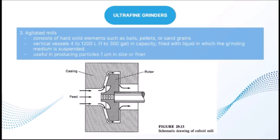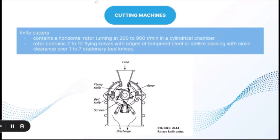For ultrafine grinding, agitated mills are small batch non-rotary mills containing a solid grinding medium of balls, pellets, or sand grains. These are vertical vessels of 4–1,200 liters capacity filled with liquid in which the grinding medium is suspended. In some designs, the charge is agitated with a multi-armed impeller; in others, used for hard materials such as silica or titanium dioxide, a reciprocating central column vibrates the vessel contents at about 20 Hz. Concentrated feed slurry enters at the top and product is withdrawn through a screen at the bottom. Agitated mills are especially useful for producing particles 1 mm in size or finer.